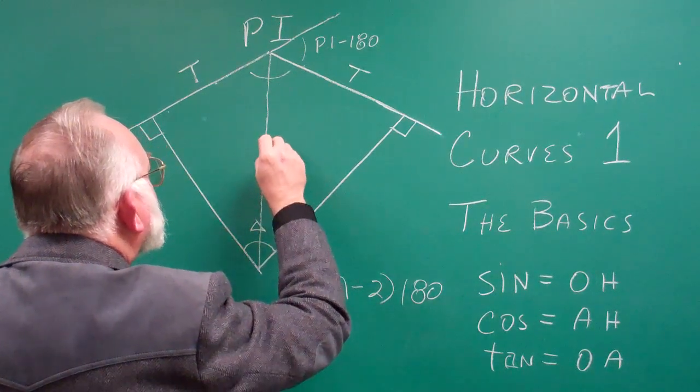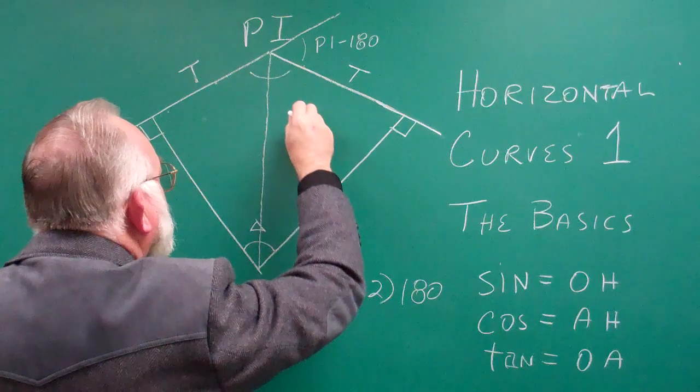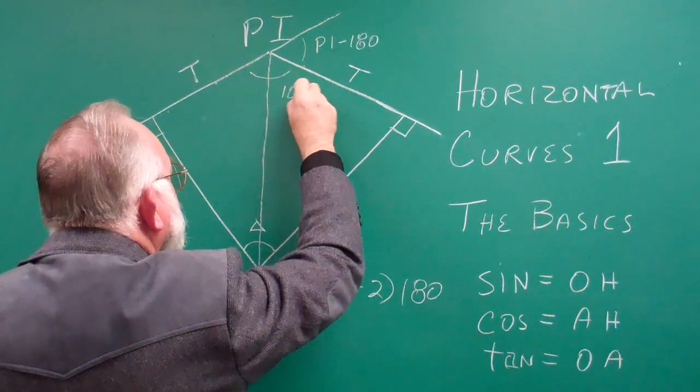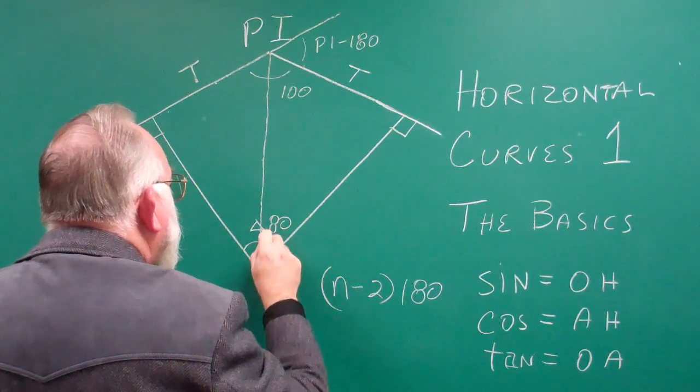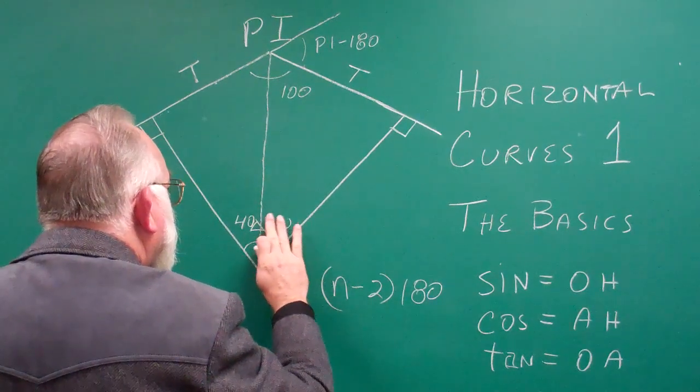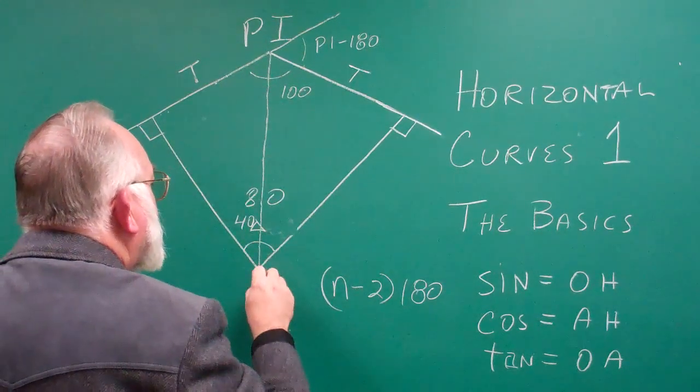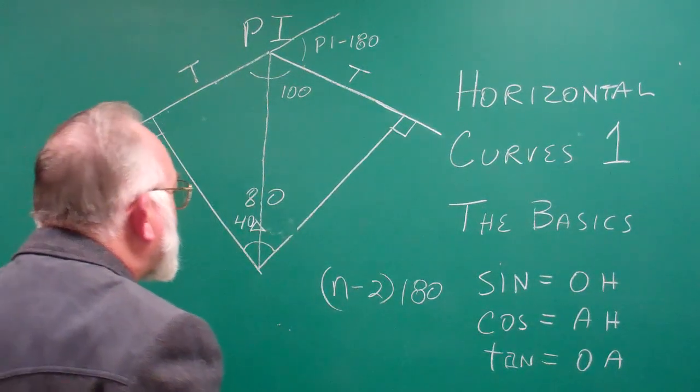So let's just say that this angle here is, I'm going to lie and say it's 100 degrees, and this one is 80, and half of that is 40. So you're always going to be dealing with half of this angle to do all your calculations.